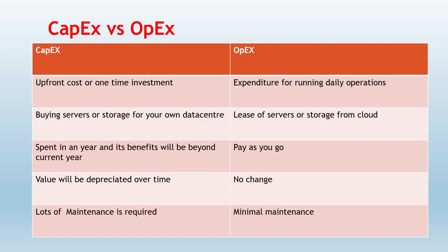With capital expenditure you also have depreciated cost in future years for what you spent in the current year. With operational expenditure there is no such change, because you are not buying any fixed assets with a big upfront investment. There is nothing losing value over time, since you are only paying for what you lease and use from the cloud.